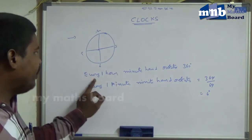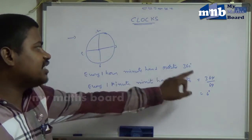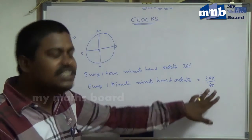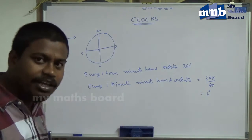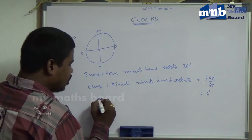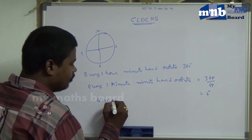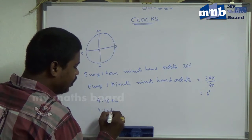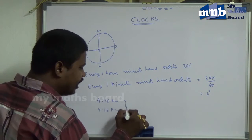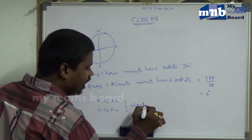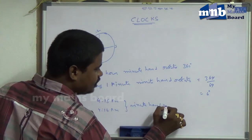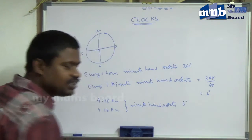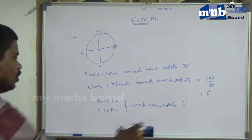So every one hour the minute hand rotates 360 degrees. At the same time, every one minute the minute hand rotates 6 degrees. For example, the present time is 4:15 PM. At 4:16 PM, the minute hand rotates 6 degrees — a 6-degree space.